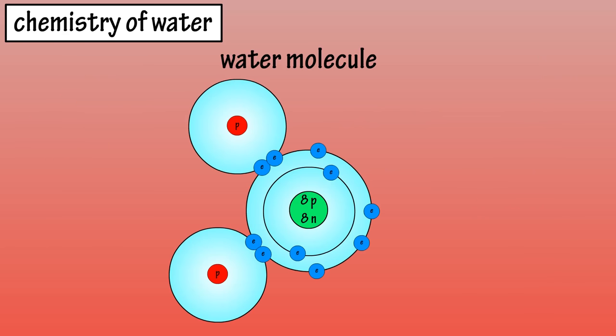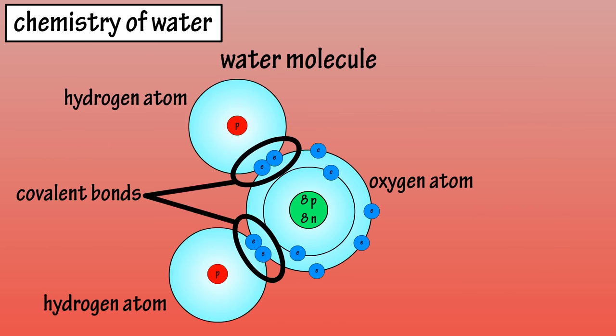A molecule of water has one oxygen atom covalently bonded to two hydrogen atoms. Covalent bonds are the chemical bonds formed by the sharing of one or more pairs of electrons by the outer energy levels or shells of two atoms.